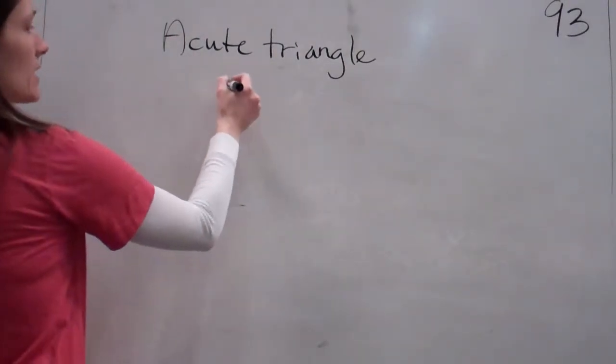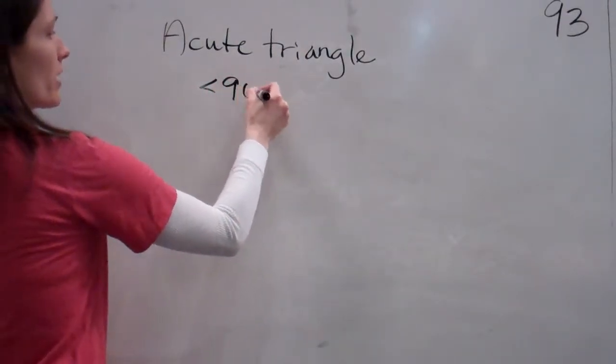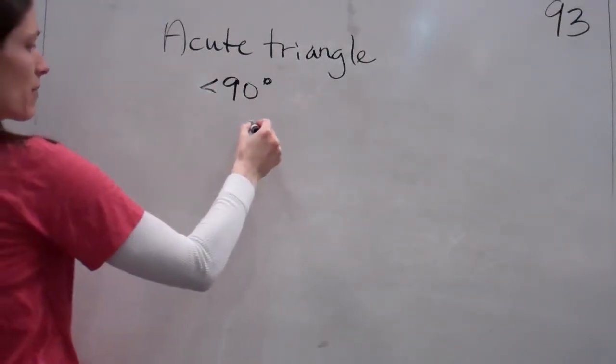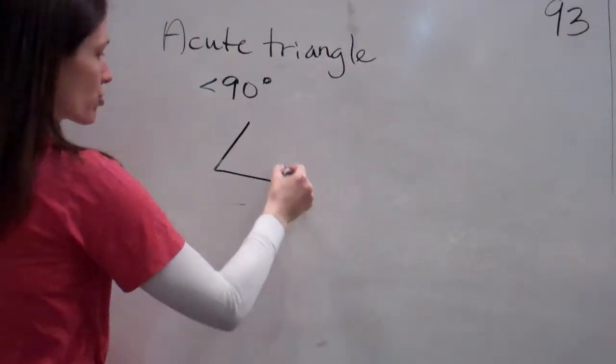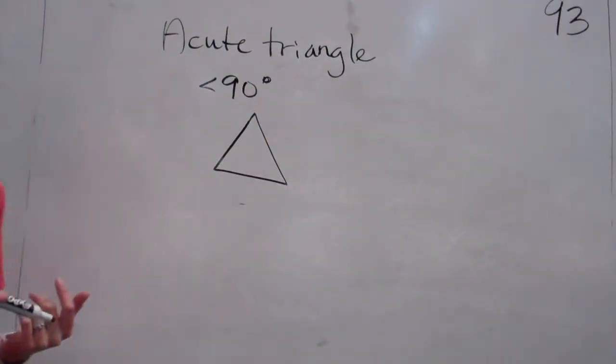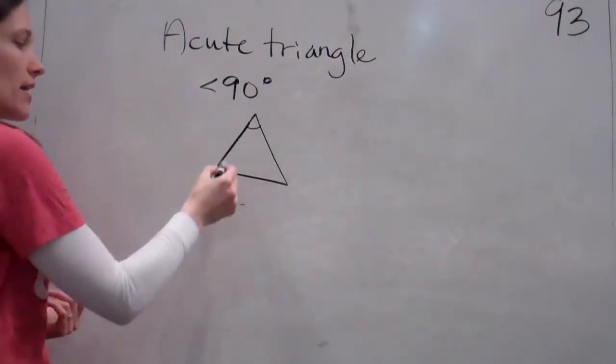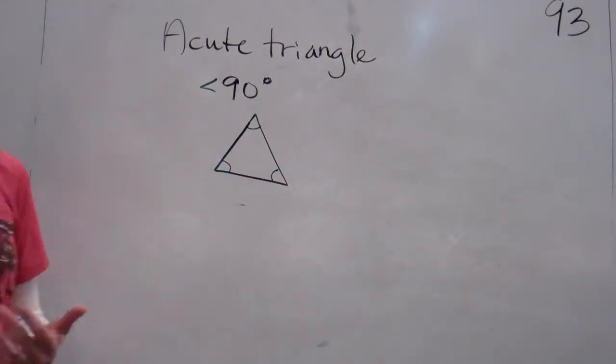Okay. So, acute means less than 90 degrees. So basically like, okay. So basically what that means is that every angle I draw is less than 90 degrees. This one's less than 90, this one's less than 90, and this one's less than 90. So that one's an acute triangle.